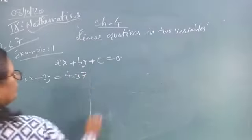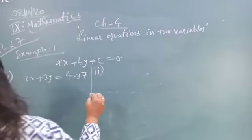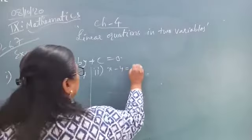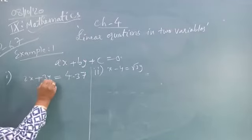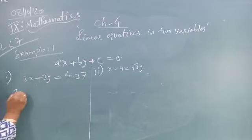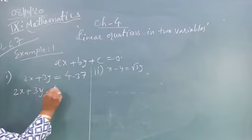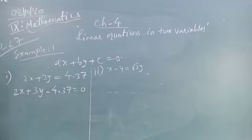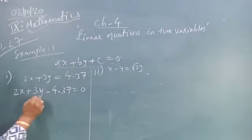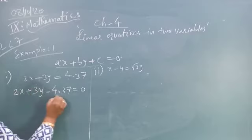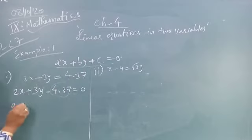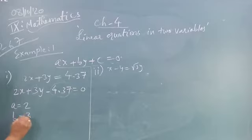This is equation 1. Now first we convert it into the standard form, AX plus BY plus C is equal to 0. So this can be written as 2X plus 3Y minus 4.37 is equal to 0. Now what is A? A is the coefficient of X, so A is 2. What is B? Coefficient of Y, so B is 3. And what is C? That is the constant, so C is minus 4.37.